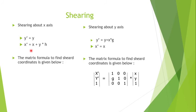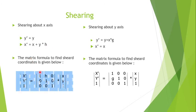In shearing about x-axis, the y-coordinate remains the same, so y' = y. Since it is x-shear, change in x is possible: x' = x + y * shearing_factor. The matrix to find sheared coordinates about x-axis is given below. For shearing about y-axis, the x-coordinate remains the same and y' = y + x * g, where g is the shearing factor for y-axis. The matrix formula to find sheared coordinates is given below.